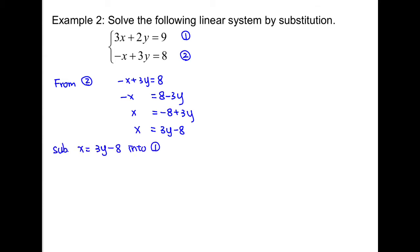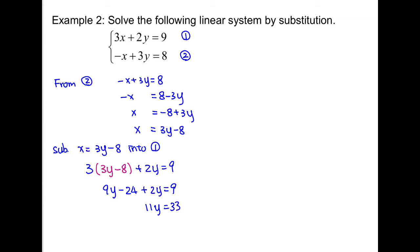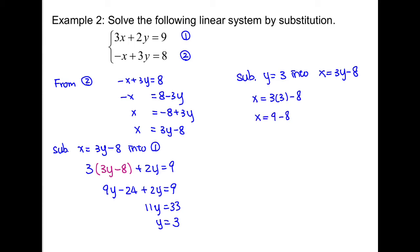Next, substitute x equals 3y minus 8 into equation 1 to solve for y. We get 3 times (3y minus 8) plus 2y equals 9. Expand and simplify to get 11y equals 33. Dividing by 11 on both sides, y equals 3. Now substitute y equals 3 back into x equals 3y minus 8. We get x equals 3 times 3 minus 8, so x equals 1. Therefore, the solution is at (1, 3).